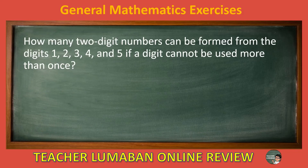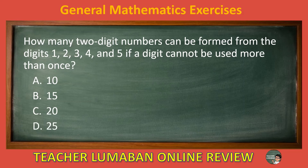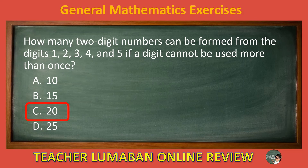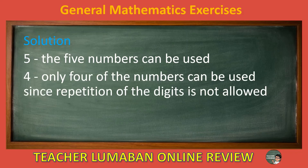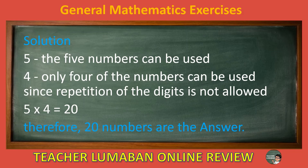How many two-digit numbers can be formed from the digits 1, 2, 3, 4, and 5 if a digit cannot be used more than once? Letter A: 10. Letter B: 15. Letter C: 20. Letter D: 25. Choose the suitable answer in 5 seconds. 5, 4, 3, 2, 1. The correct answer is Letter C: 20. Solution: There are 5 numbers available but only 4 can be used for the second digit since repetition is not allowed. 5 times 4 equals 20. Therefore, 20 numbers is the answer.